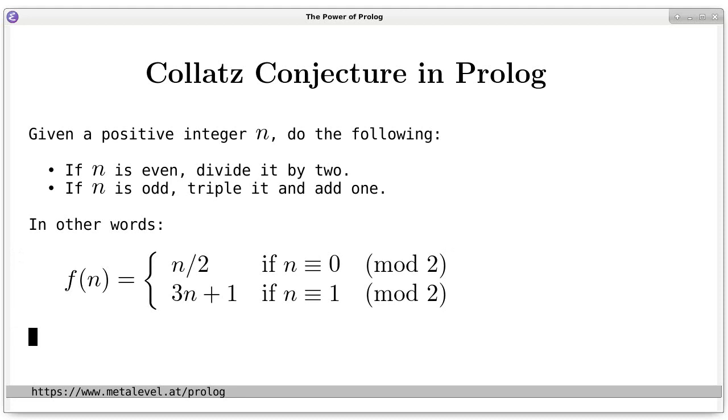In other words, we are talking about a function f that either halves n or computes 3 times n plus 1, depending on whether n is even or odd.